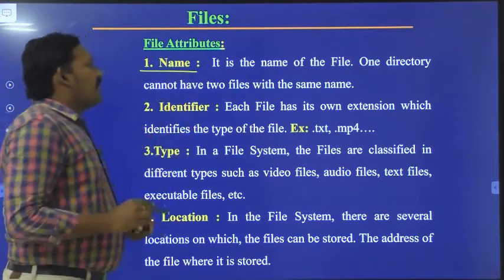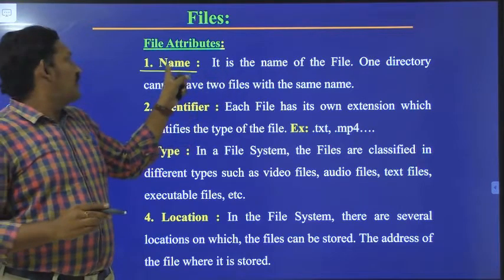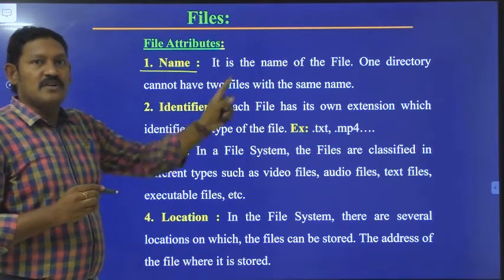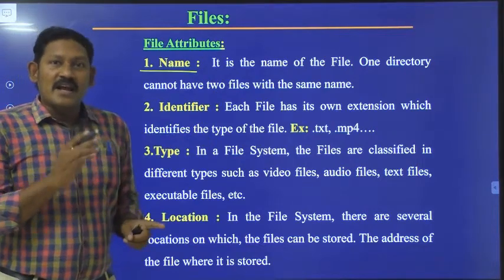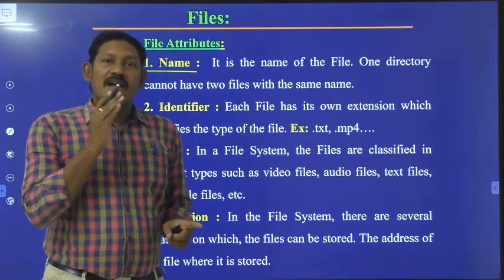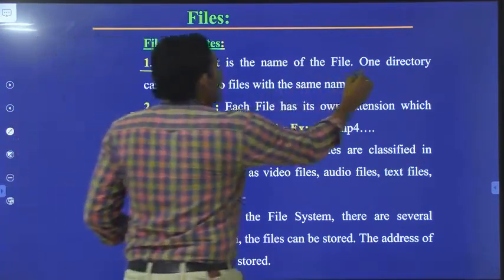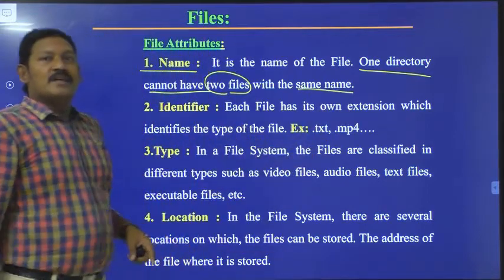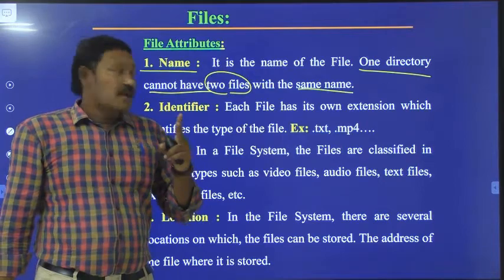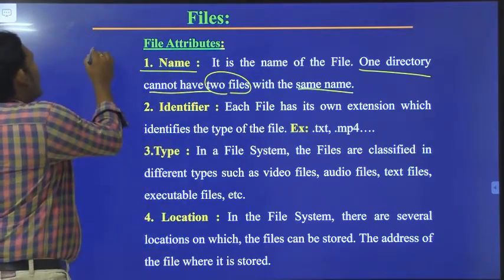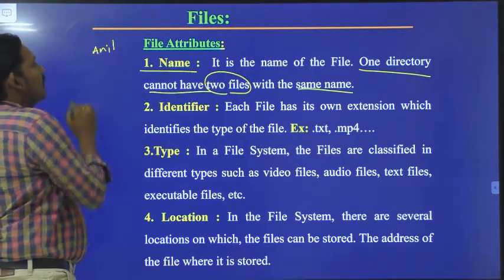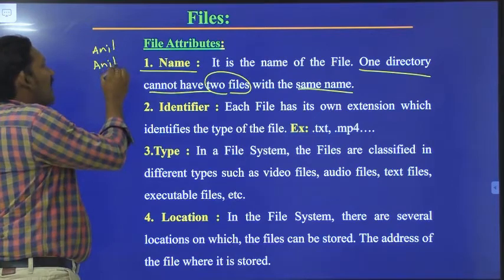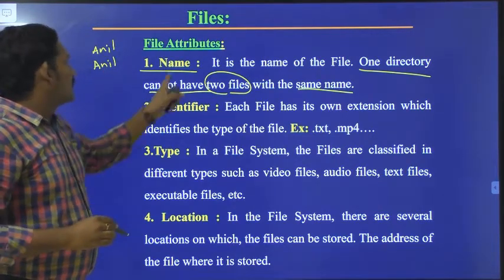So what do you mean by the name of a file? The name attribute consists of whatever name we have given to that file. In a directory, no two files are allowed to have the same file name. For example, if I name a file 'anil', I cannot create another file with the same name 'anil' in the same directory — I should name it 'anil1' or 'anil2'. That is regarding the name attribute.